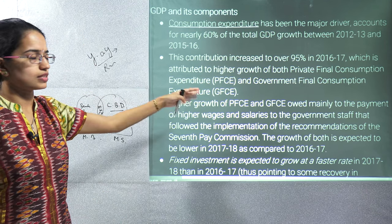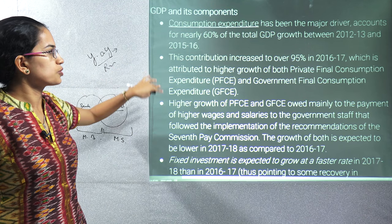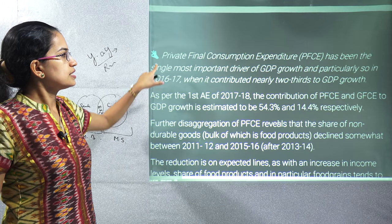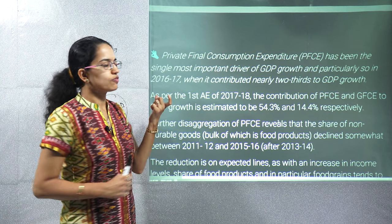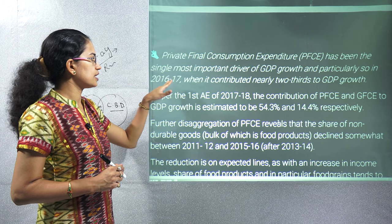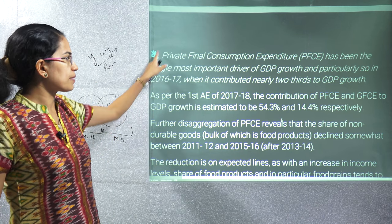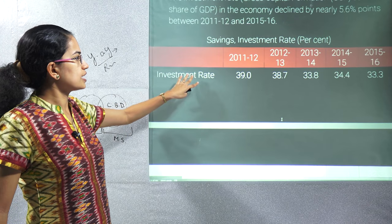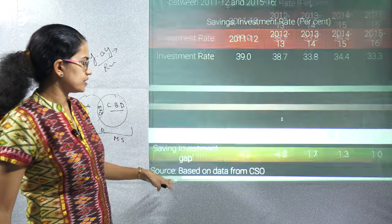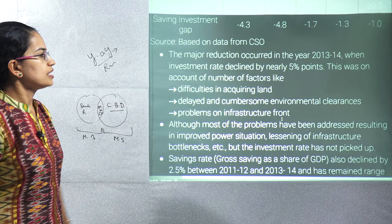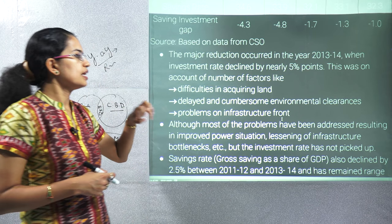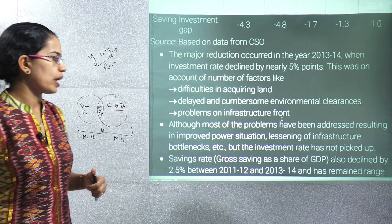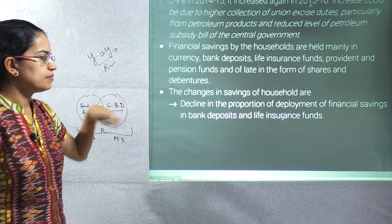Under consumption expenditure we break it into two heads: government and private final consumption expenditure. Both have increased over the period. Private final consumption expenditure is one of the major drivers of GDP — in 2016-17 it contributed nearly two-thirds of total GDP growth. The saving-investment ratio gap has been declining over the years due to difficulty in getting environmental clearances, problems in infrastructure, and problems in acquiring land.